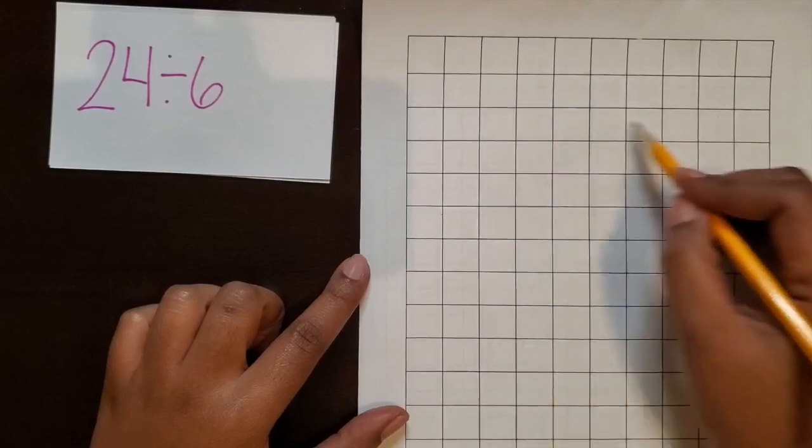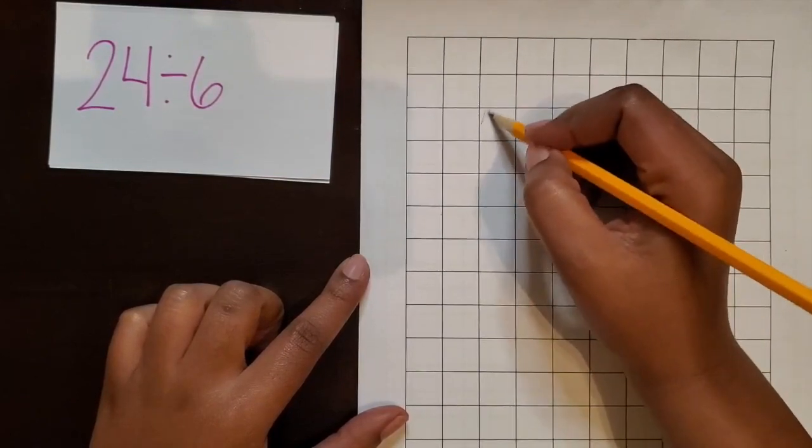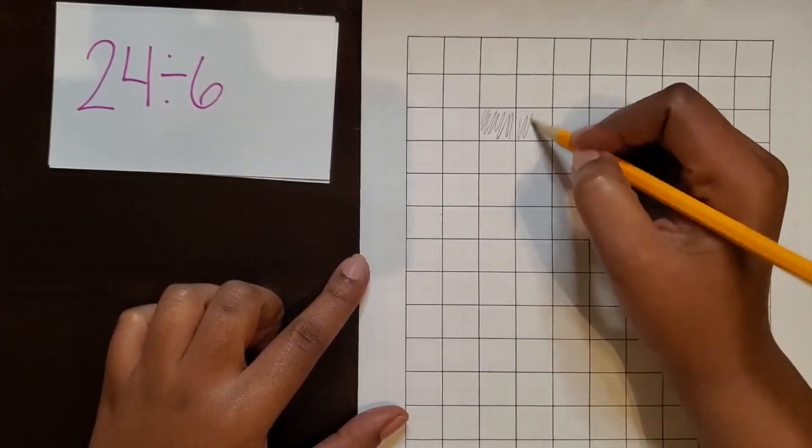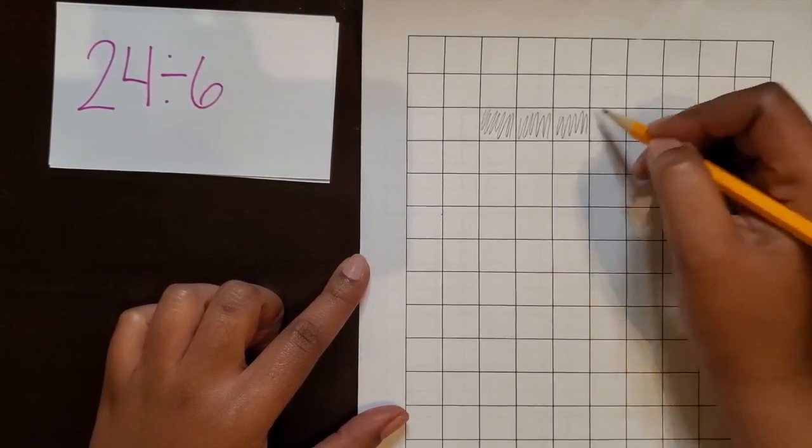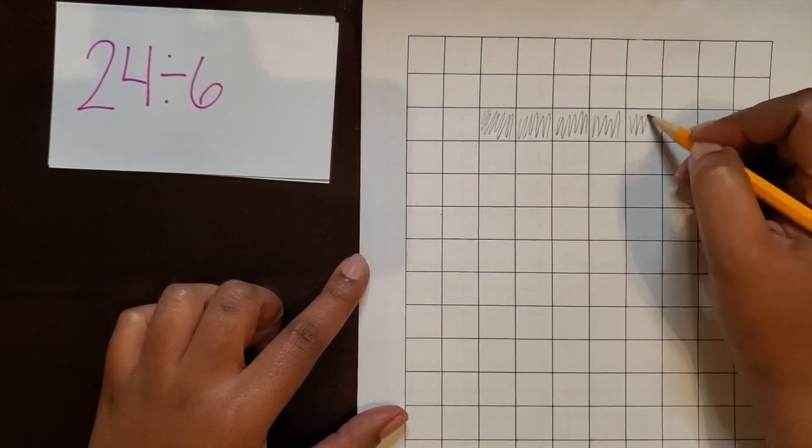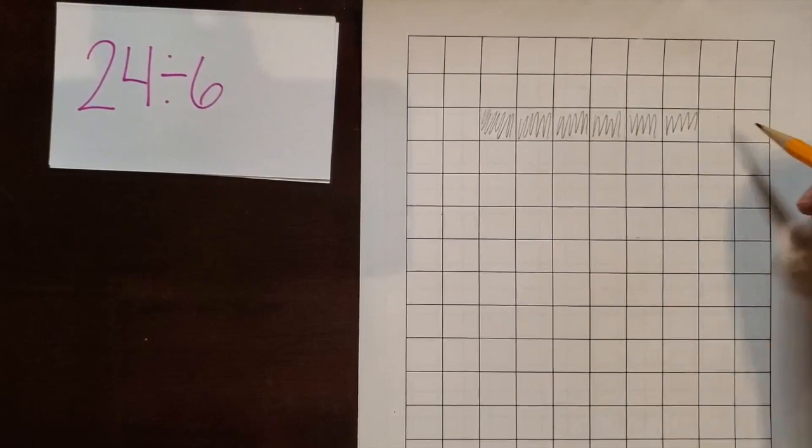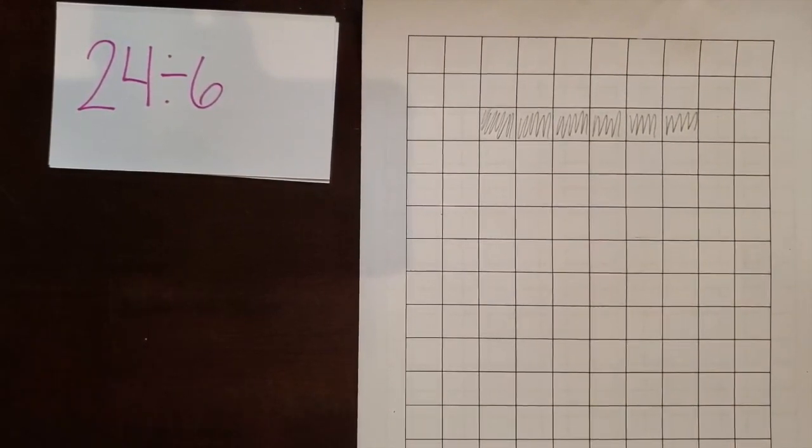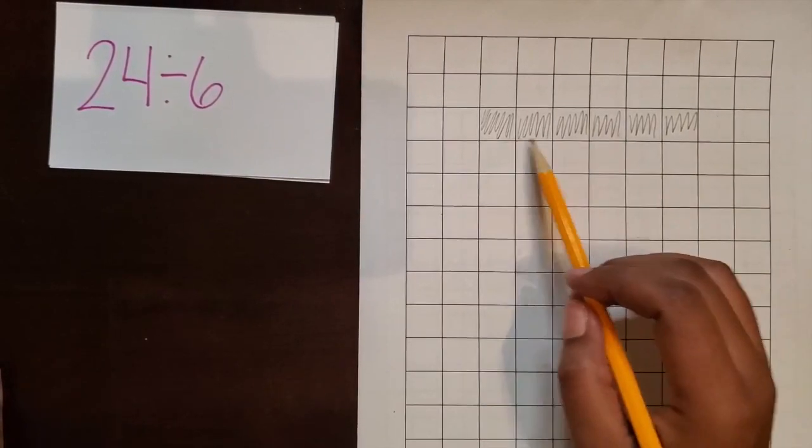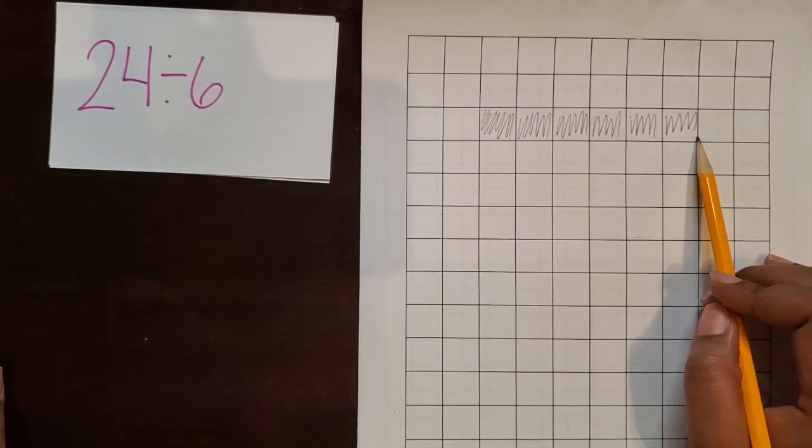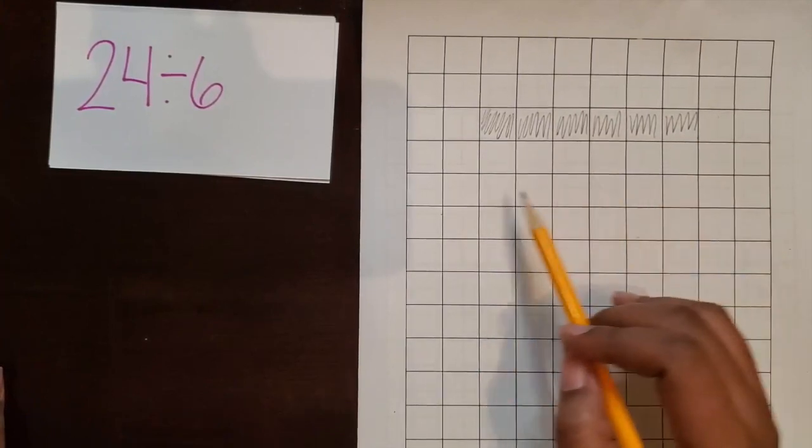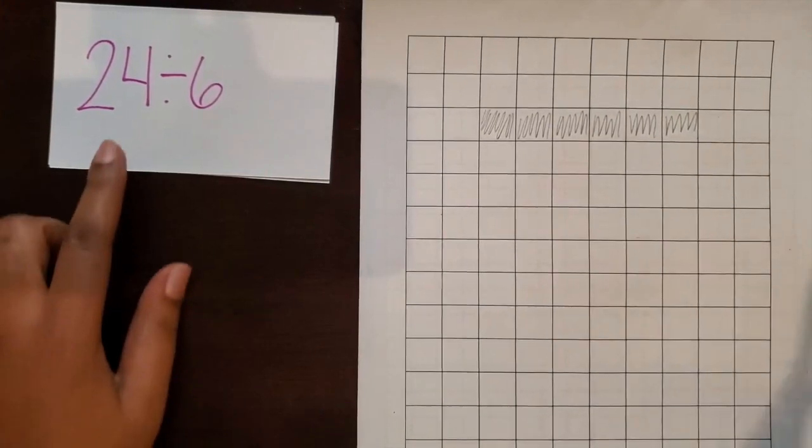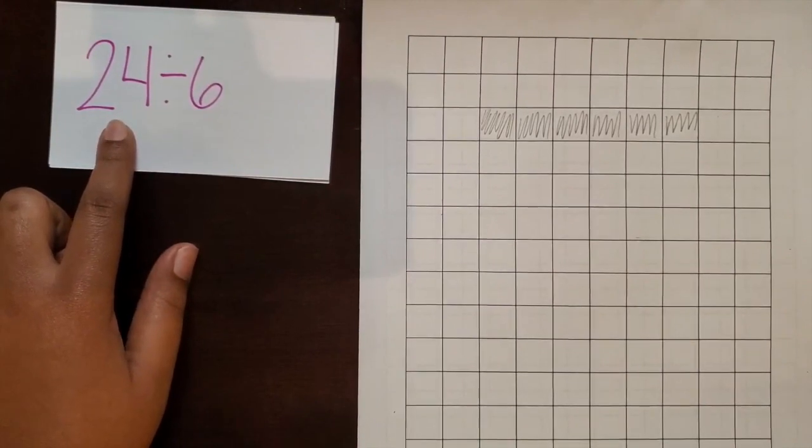So I'm going to start where I know I have enough to get to 6. I'm going to shade in a row of 6 square units. And remember, this is just one way that you can practice division with your students and connect and relate it to finding area. So I have the row of 6 square units. I'm going to continue to add rows of 6 square units until I get to the total amount of 24 square units.